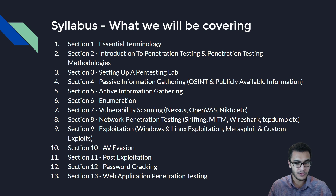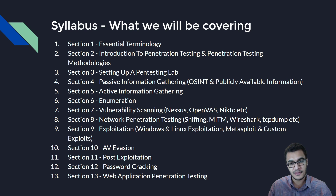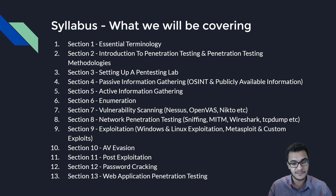And then we'll move on to enumeration, trying to enumerate as much information from various services on our target as possible so that we have an idea of what we're dealing with. We'll then move on to vulnerability scanning, taking a look at how to use tools like Nessus, OpenVAS, and Nikto to perform various levels of vulnerability scanning, either on web applications or on actual hosts.